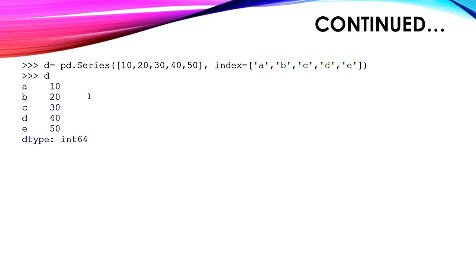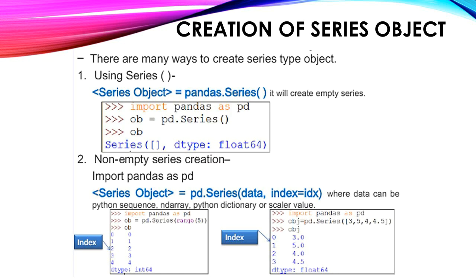Let us take a recap of what we have seen: first, how to create an empty series; second, a series with one element and a default index; third, a series with one element and a named index. Now we will see some theory. Using the series method, we can create an empty series with: import pandas as pd; ob = pd.Series(). We have seen in the demonstration how to create an empty series.